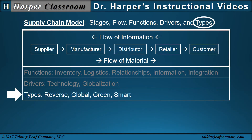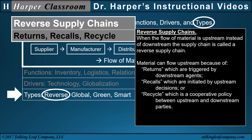Now consider four important types of supply chains. Reverse supply chains. When the flow of material is upstream instead of downstream, the supply chain is called a reverse supply chain. Material can flow upstream because of returns, which are triggered by downstream agents; recalls, which are initiated by upstream decisions; or recycle, which is a cooperative policy between upstream and downstream parties.